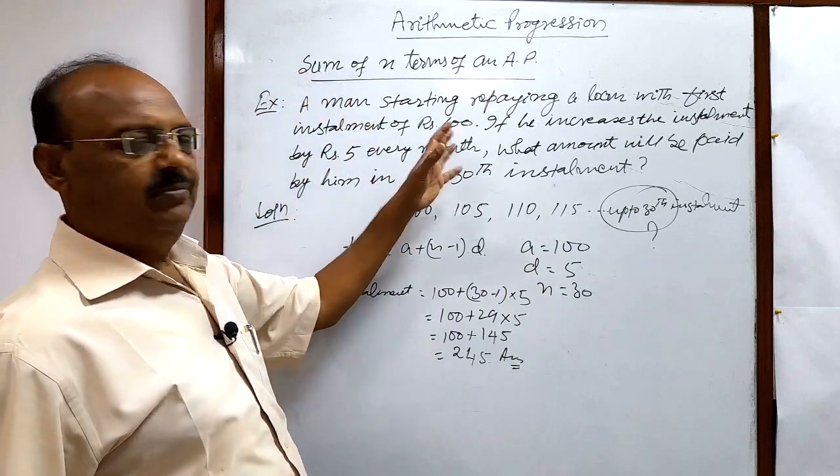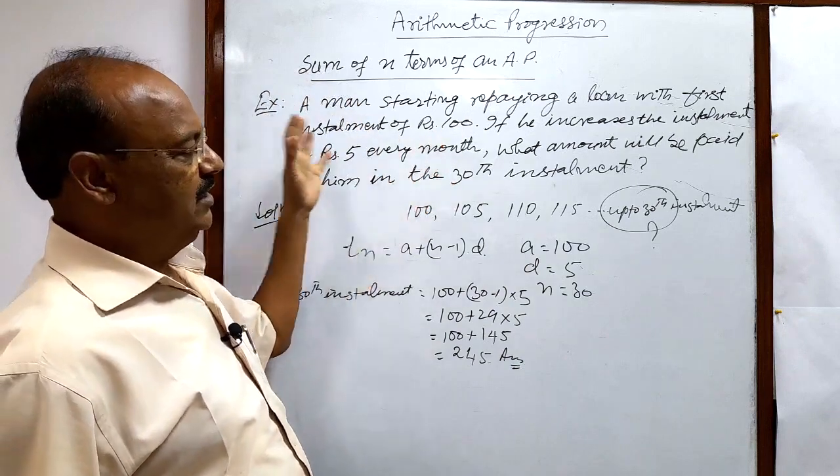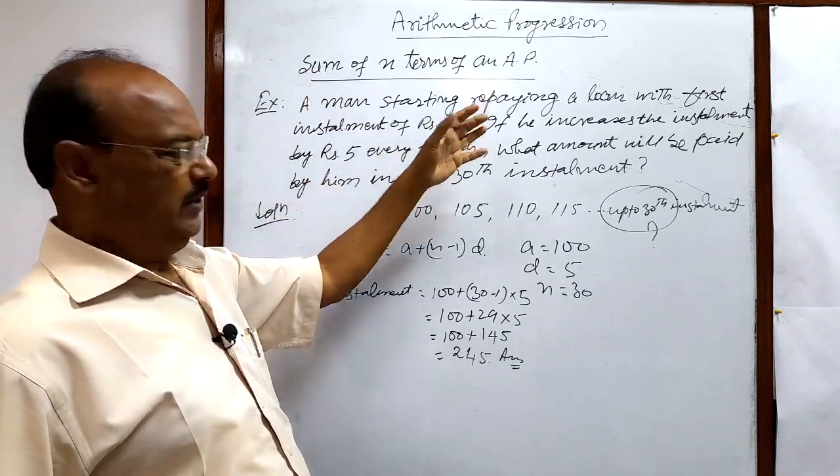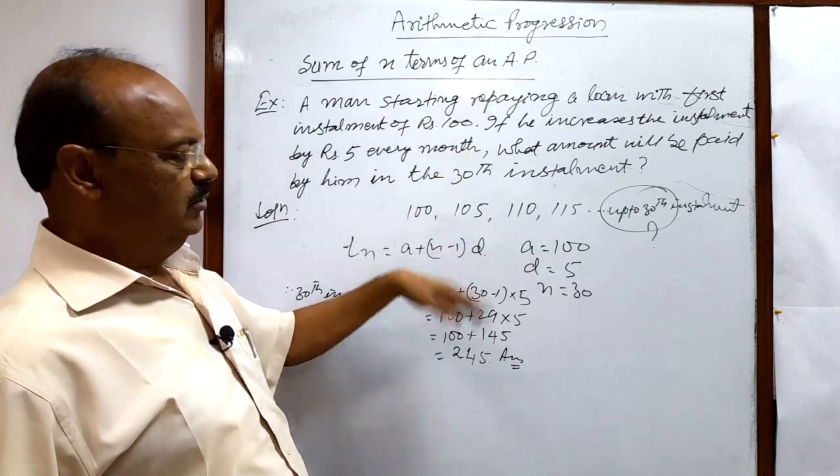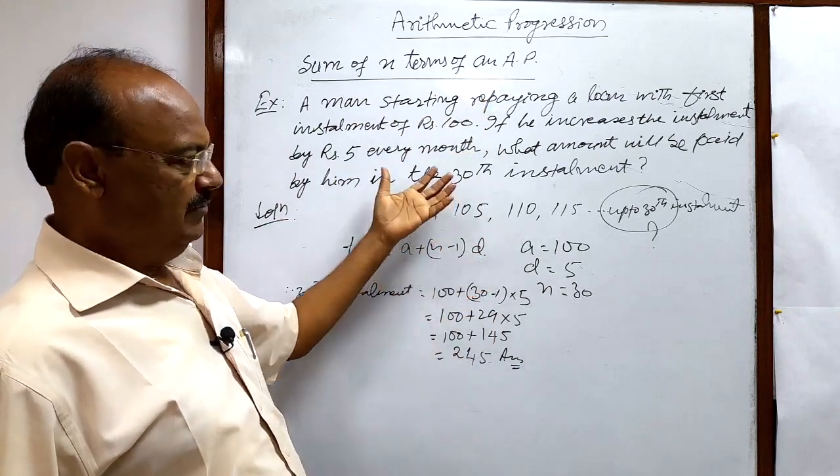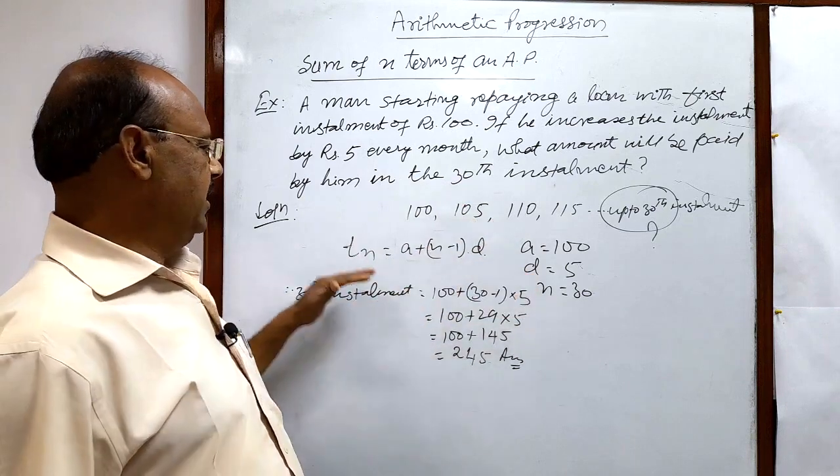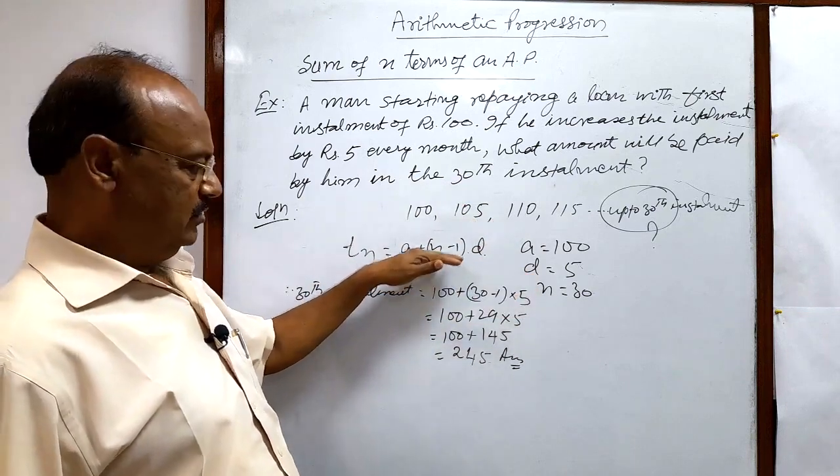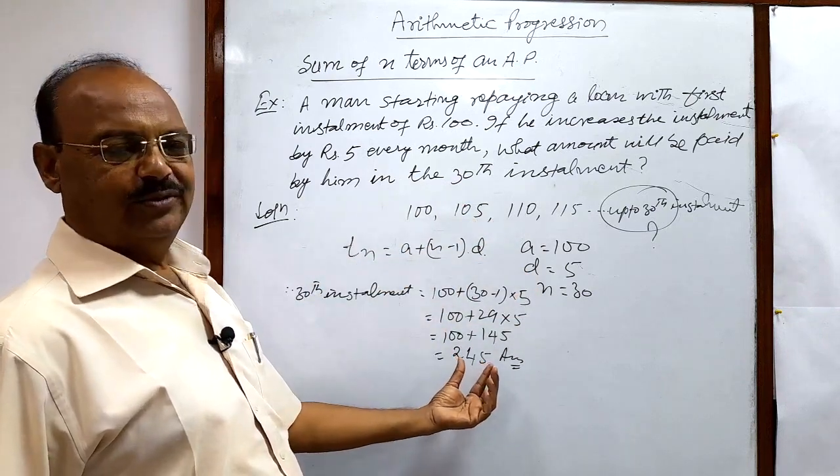The question looks very big because it's given in word form, but you see the solution is very simple. We have all the values: a, d, and n. We just have to use this formula and solve it, and you will get the answer 245.